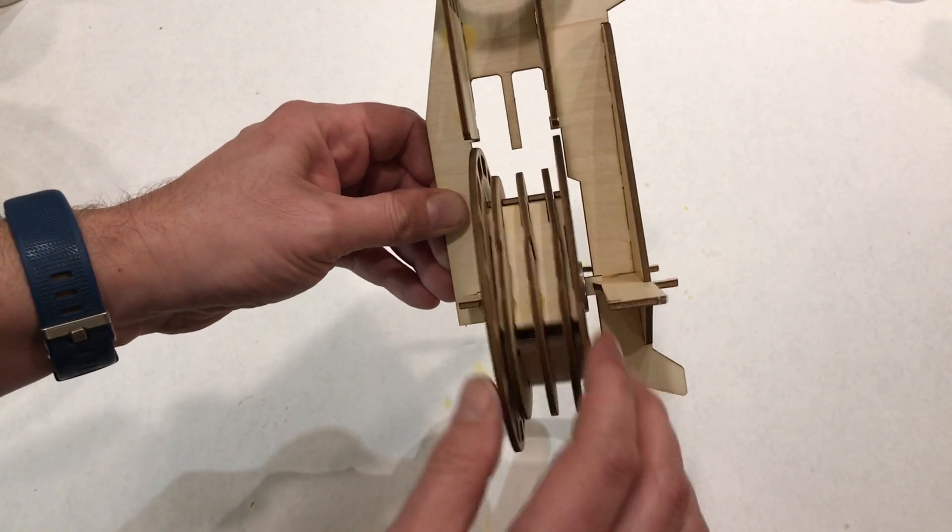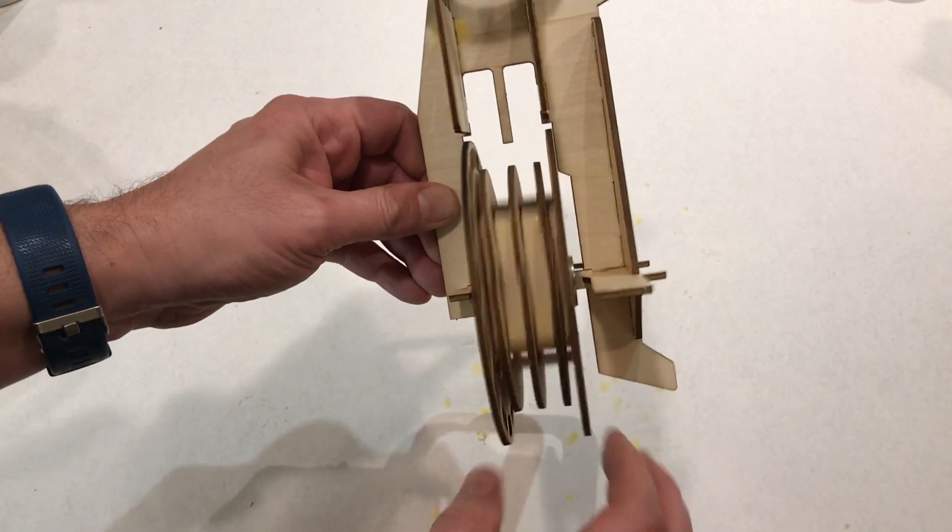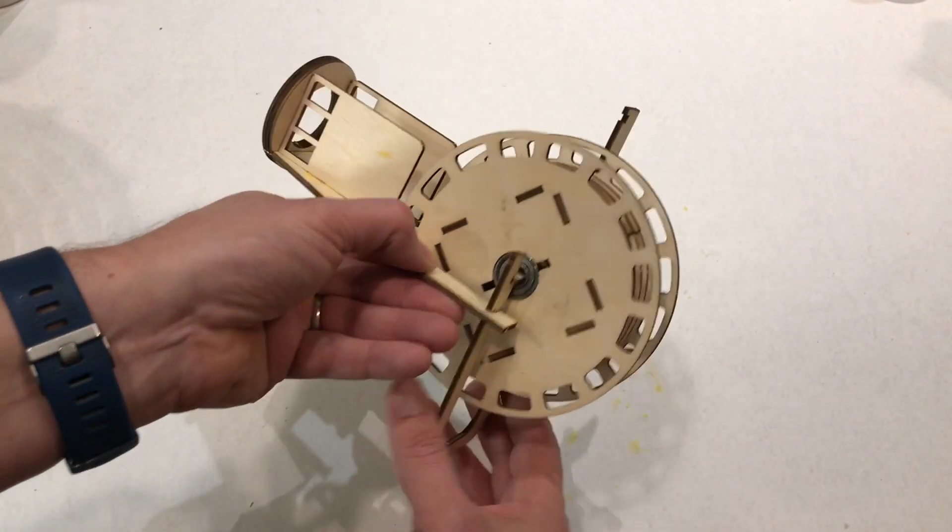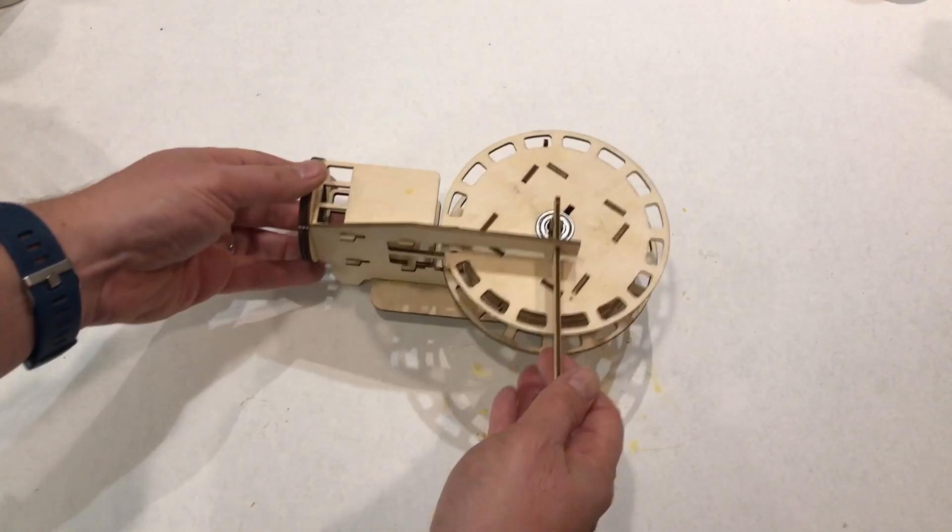There we go, and I can see that I'm spinning without any rubbing. A little rubbing is fine, but here's our bottom conveyor here.